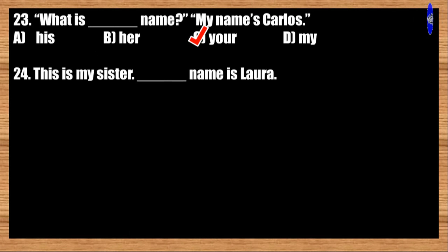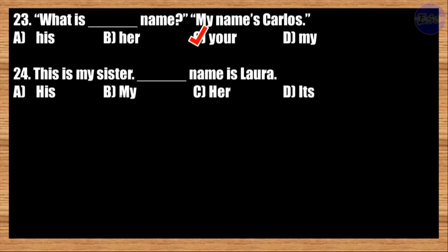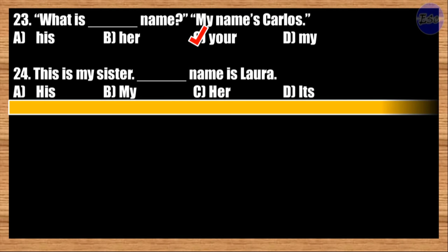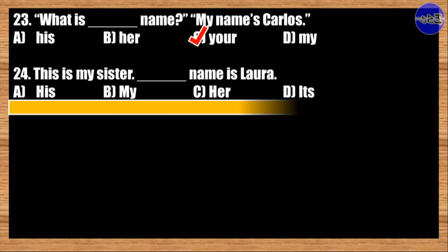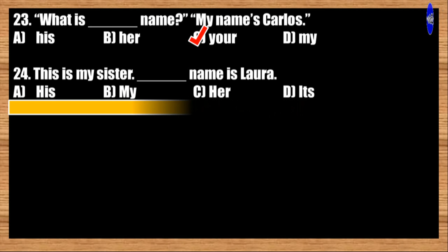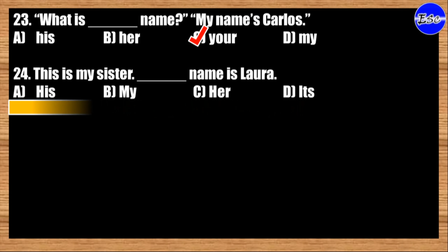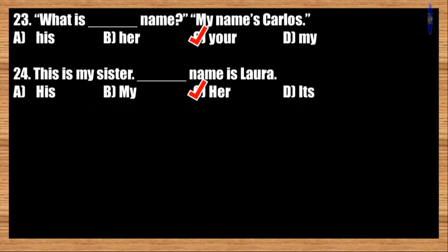Number twenty-four: This is my sister. Blank name is Laura. A: his; B: my; C: her; D: its. The best answer is option C. This is my sister. Her name is Laura.